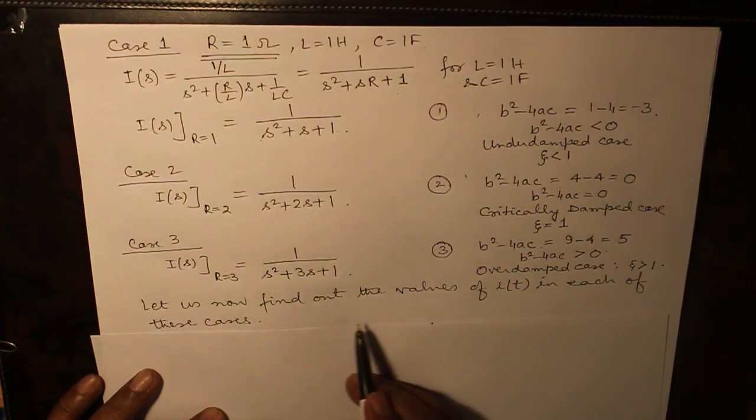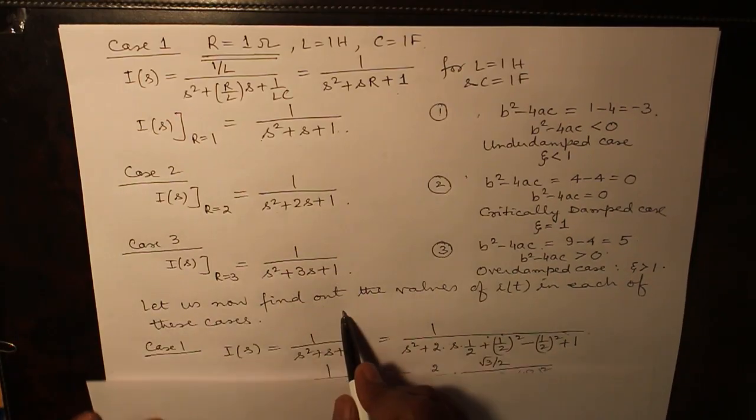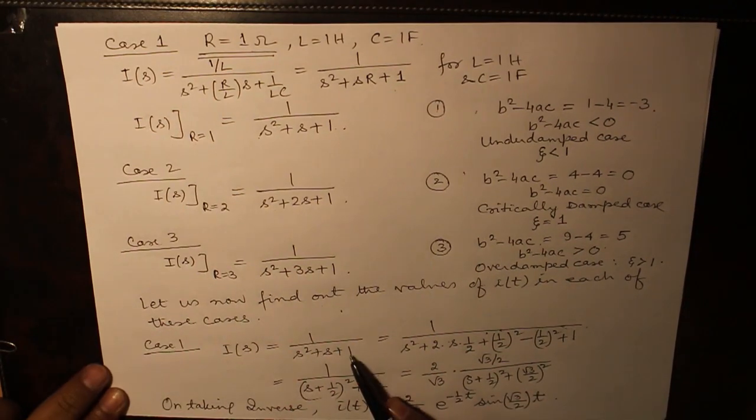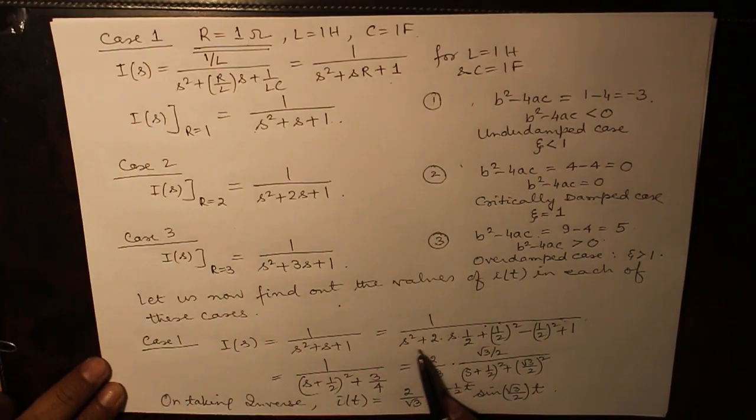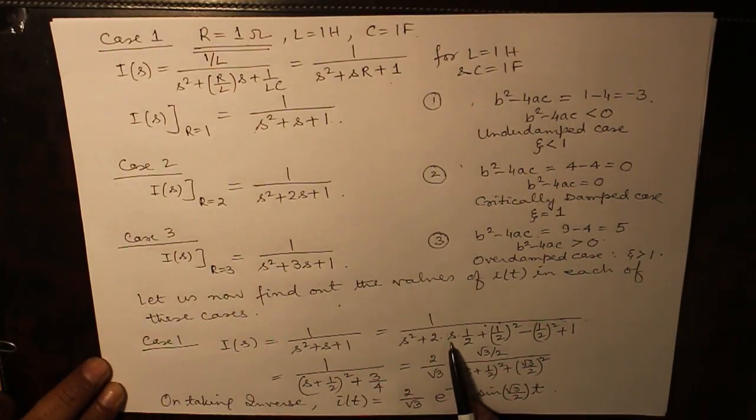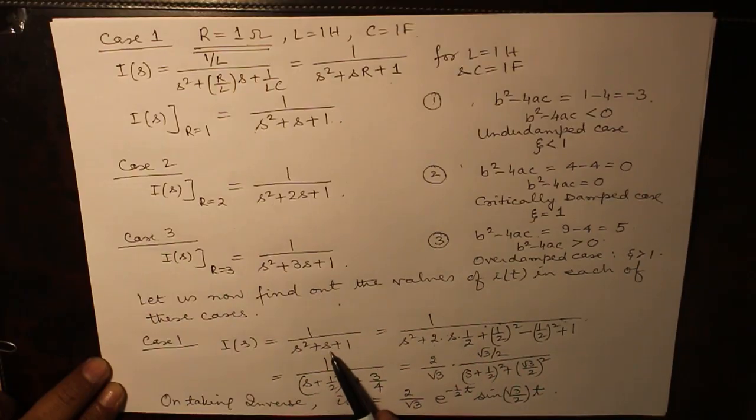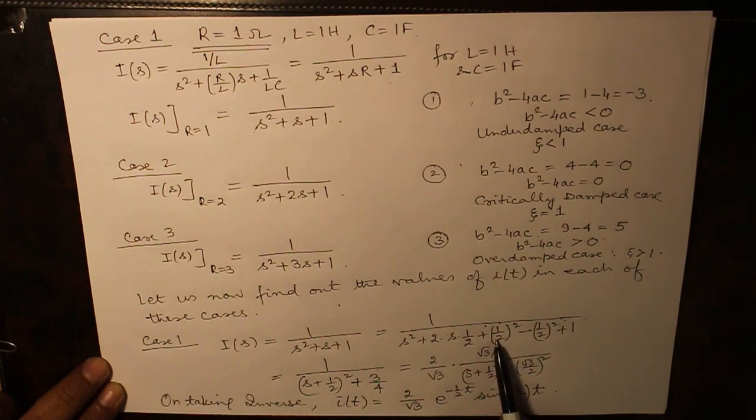Let us now find out the values of I(t) in each of the three cases. Case 1, I(s) equals 1 over s² plus s plus 1. Which, on completion of square method, s² plus twice of s into half so that it becomes s plus half square minus half square so that we are not doing anything additional plus of 1.